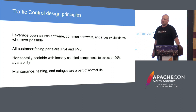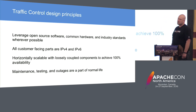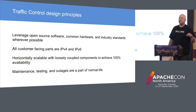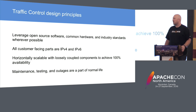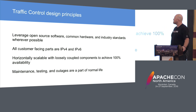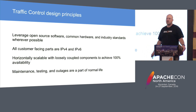But before we wrote any code, we said we need to figure out what our design principles are going to be. These are design principles we still use today, and I think coming up with them before we wrote any code really helped guide us in the right direction. Design principles can be boiled down to four things: we're going to leverage open source software, common hardware, and industry standards like HTTP wherever possible. Like I said in the slide before, this was a mind shift for Comcast.